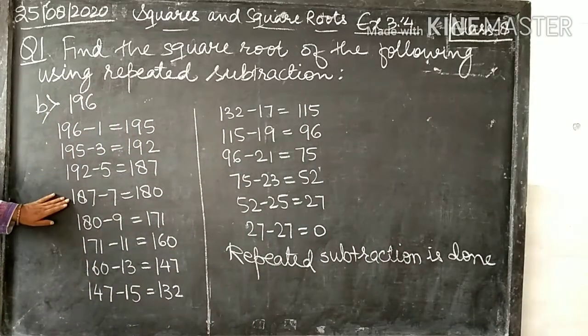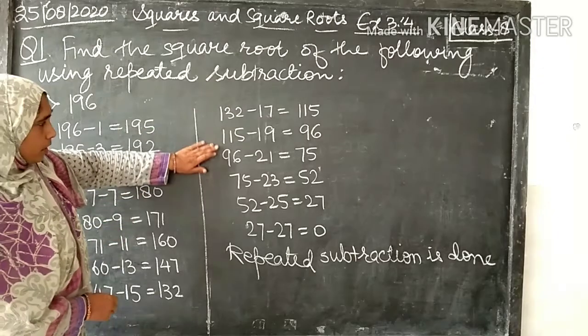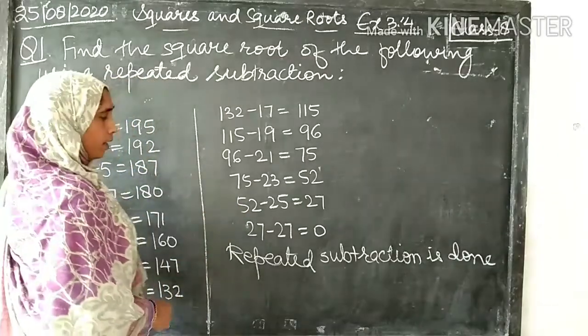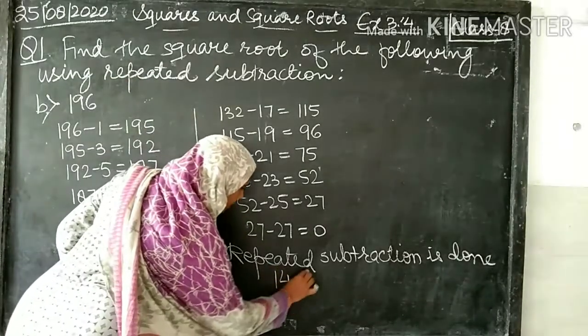1, 2, 3, 4, 5, 6, 7, 8, 9, 10, 11, 12, 13, and 14. So 14 times the repeated subtraction is done.